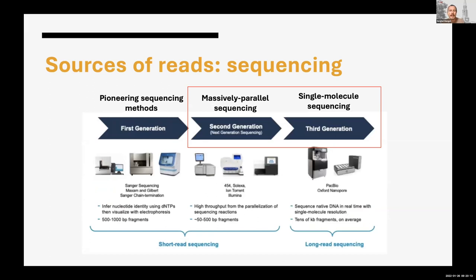There is a big history as we go to next generation sequencing — first generation, second generation, third generation, and so on. Many different attempts have been made to sequence and provide the best technology. So far, Illumina was the most successful because it's very widely used. More recent efforts like PacBio (Pacific Biosciences) and Oxford Nanopore claim to deliver long reads, which they do.